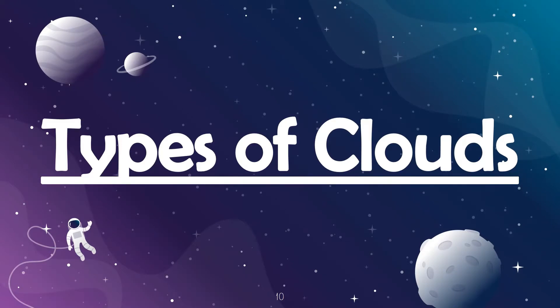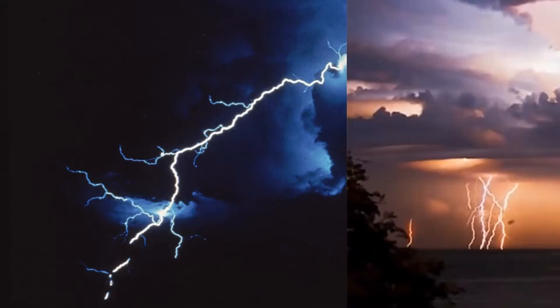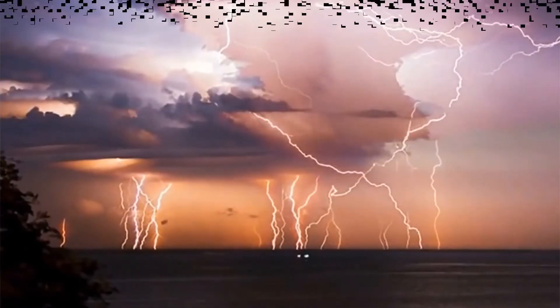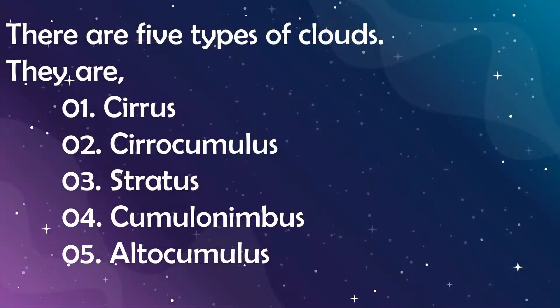Let's see what are the types of clouds. There are five types of clouds. They are Cirrus, Cirrocumulus, Stratus, Cumulonimbus, and Altocumulus.